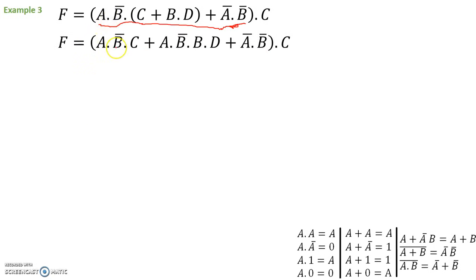Let's distribute A, NOT B inside here, as such. We have A, NOT B, ended with C from this term. Here, we have A, NOT B, ended with B, and D from that term. We'll leave this term alone, and we'll leave the final ended C outside as is. If you take a closer look here, I have B, NOT B. What's B, ended with NOT B? B, ended with NOT B is equal to 0. So, B, ended with NOT B leads me to a 0.